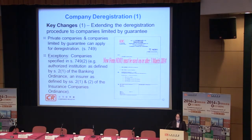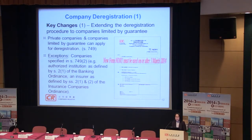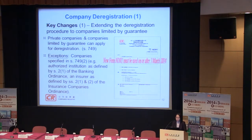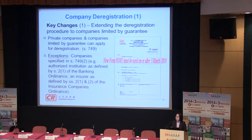I would now like to take you through deregistration under the new regime. There are three changes. First, under the current ordinance, only profit companies can apply for deregistration. Under the new regime, however, guarantee companies can also apply. But note that Section 749(2) lists certain companies that cannot apply for deregistration — for example, authorised institutions as defined by the Banking Ordinance, and insurers as defined by the Insurance Companies Ordinance. From 3rd of March, you need to use form MDR-1 instead of DR-1.